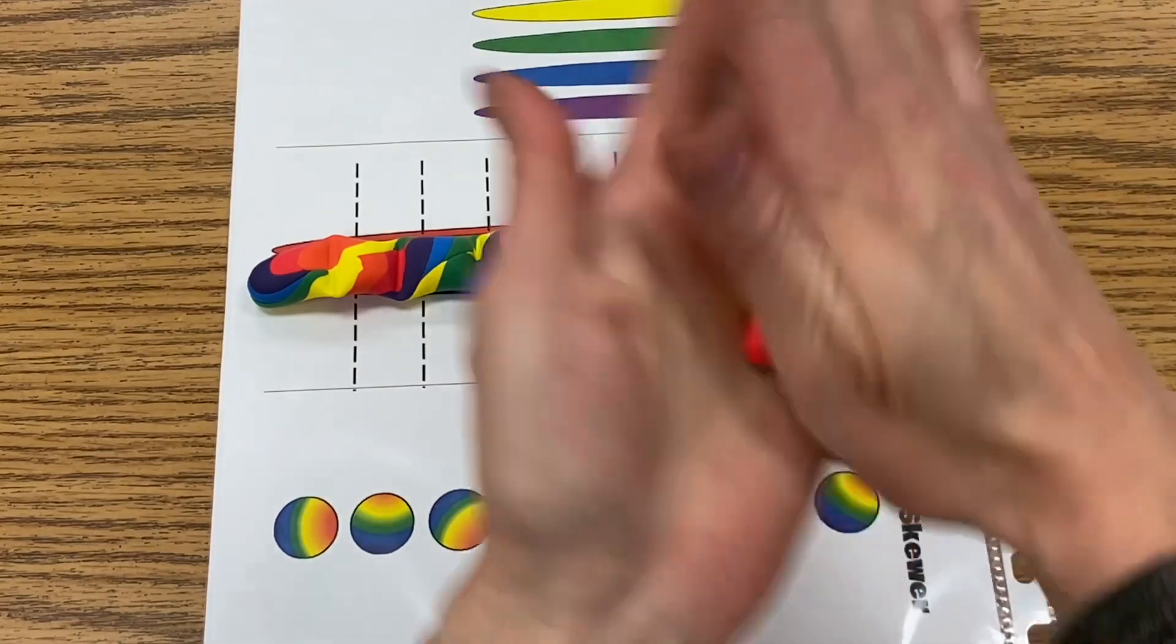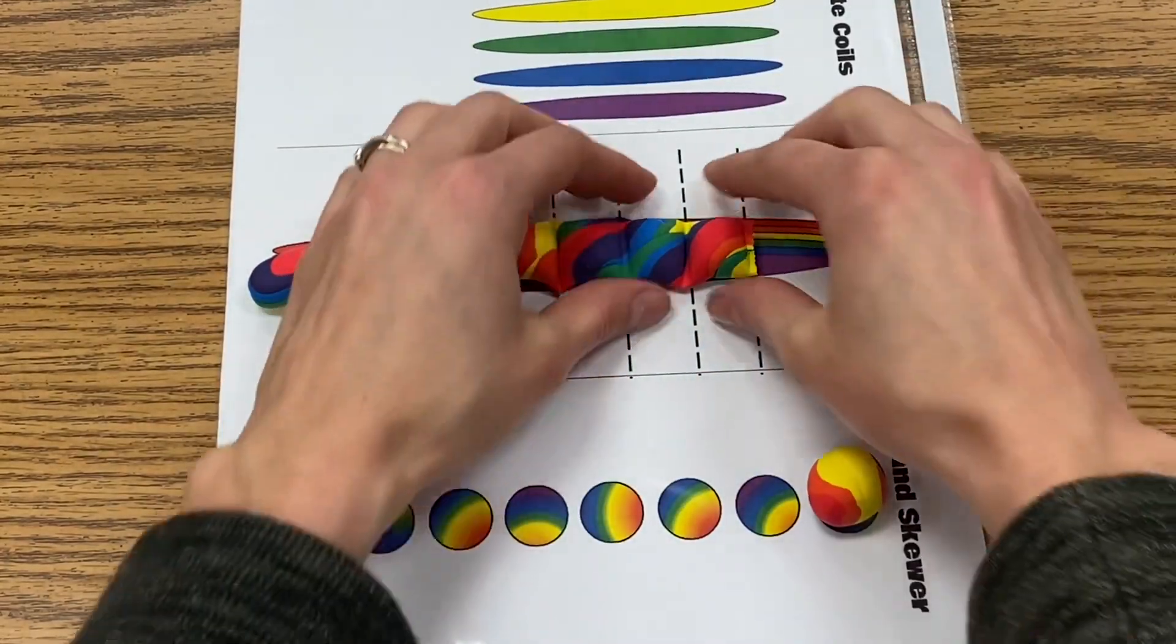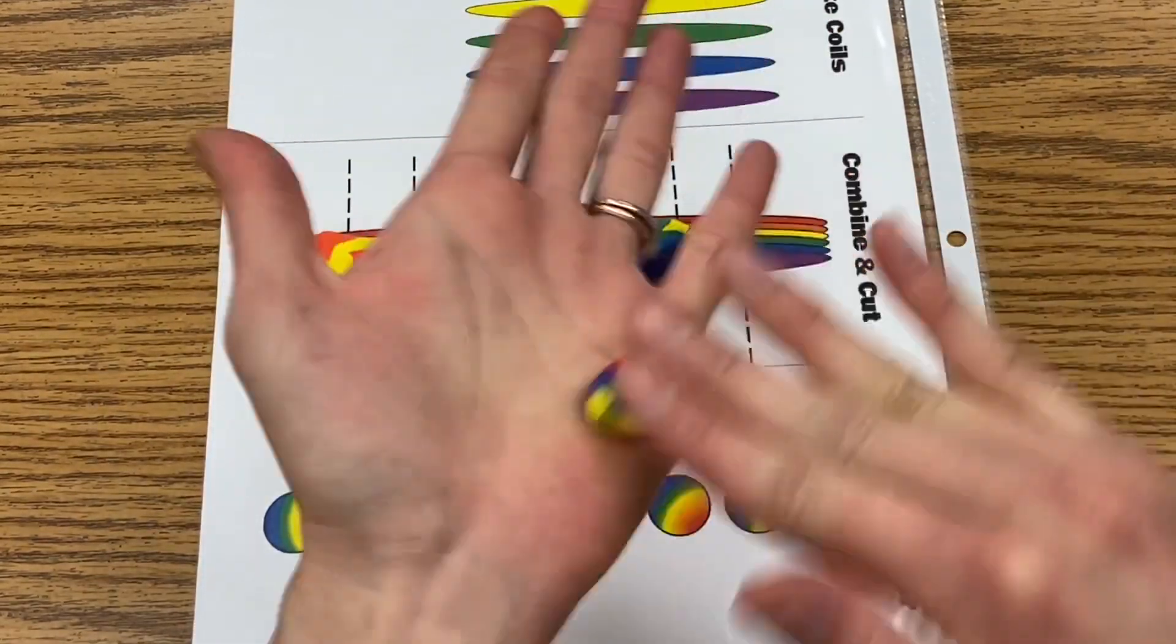And once I've cut them, I can take it and it should pop right off. And then all of these pieces just need to get rolled into a sphere, so I'll roll all of those pieces up.